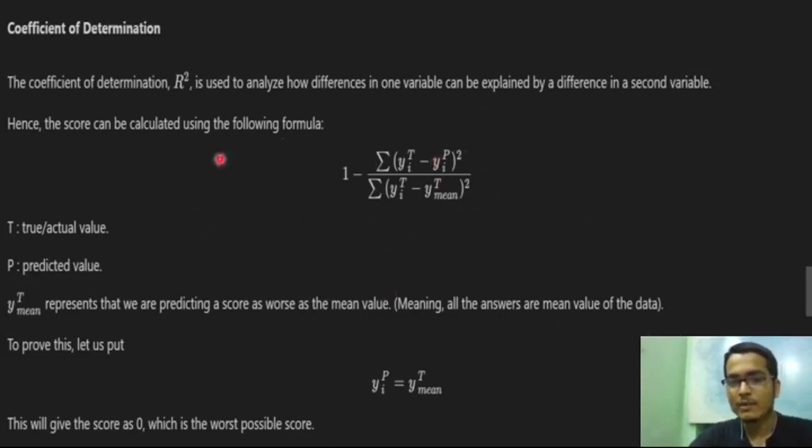To get a sense of how this formula exactly works, we can just put yp equals to yt. The worst thing we can do is start predicting the mean of all our outputs. That is really worse but what is the score? If you put here our score will be zero. With reference to the mean, how accurate are we?